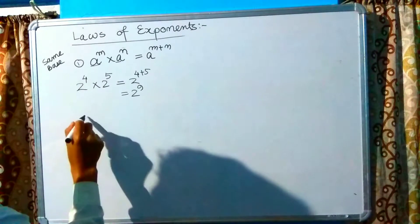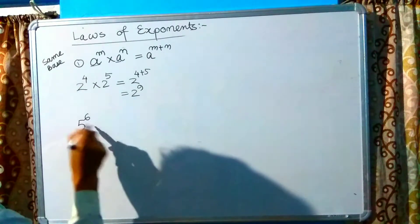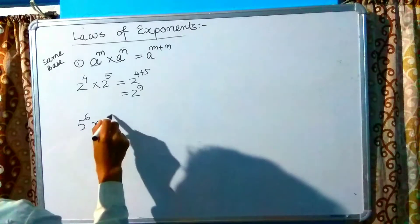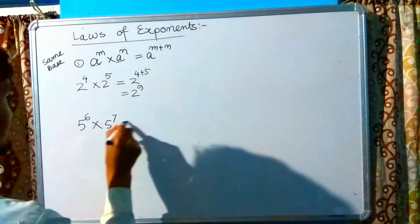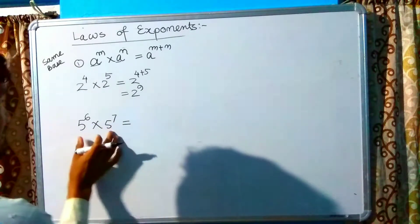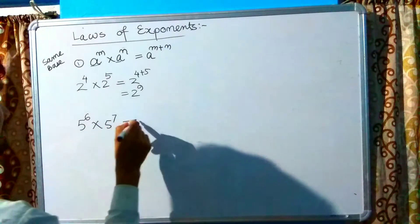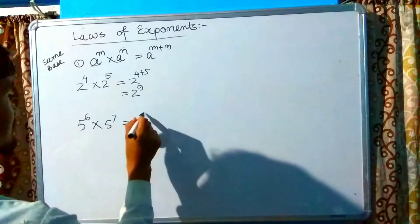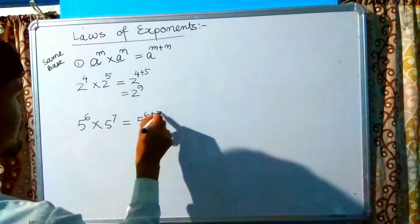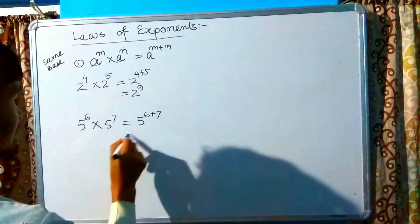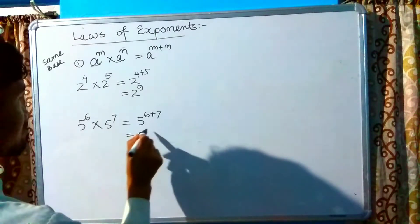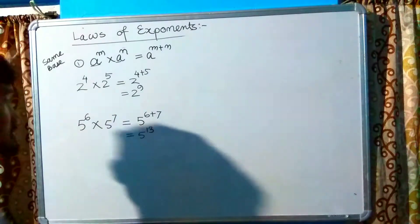Another example: 5 raised to the power 6 multiplied by 5 raised to the power 7. Since the base is the same (5), we add the powers: 5 raised to the power 6 plus 7, which equals 5 raised to the power 13.